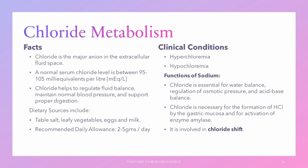Coming to chloride — chloride is a major anion in the extracellular fluid space and the normal serum chloride level is between 95 to 105 milliequivalents per liter. The main function of chloride is to help regulate fluid balance, maintain normal blood pressure, and support digestion. Dietary sources include table salt, leafy vegetables, eggs, and milk, and the recommended daily allowance is 2 to 5 grams per day. Chloride is absorbed from the small intestine and transported through the bloodstream to cells and tissue throughout the body, with the kidneys closely regulating its levels. When a person has chronic kidney disease, this balance can go out of range and significantly impact health.